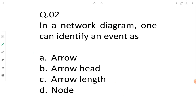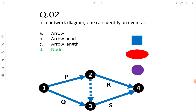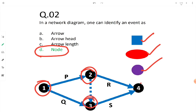Let's move to question number 2. In a network diagram, one can identify an event as an arrow, an arrowhead, an arrow length, or a node. Whenever you are provided with a network diagram, you can identify an event denoted by a node. A node can be represented by a small square, an oval shape, or a circle. Events are these nodes — node 1, node 2, node 3, and node 4. Just look for the nodal symbol which can be represented by a square, oval, or circle.